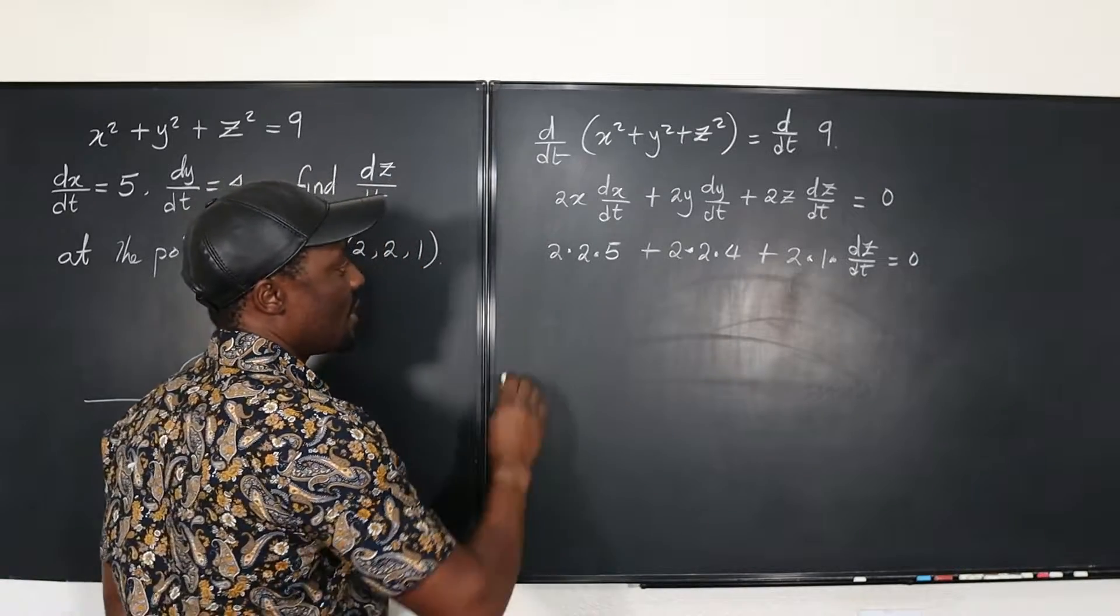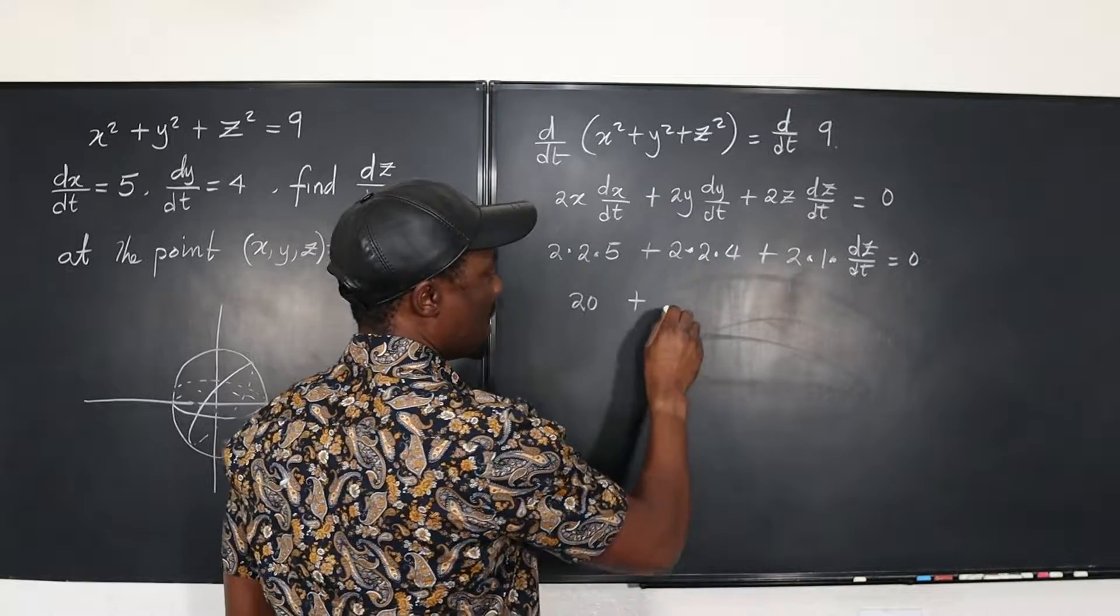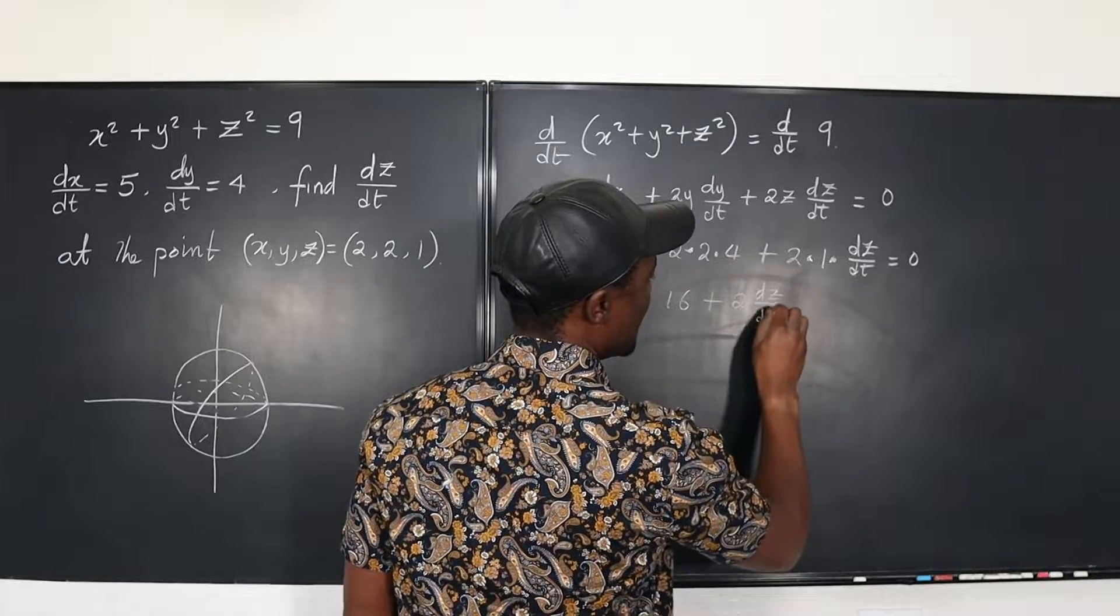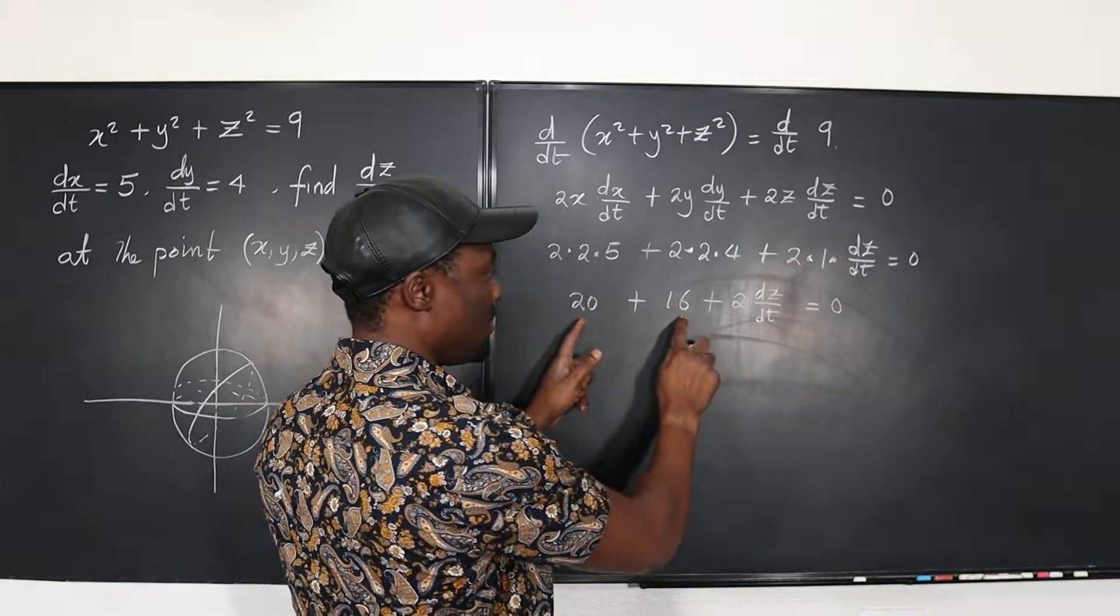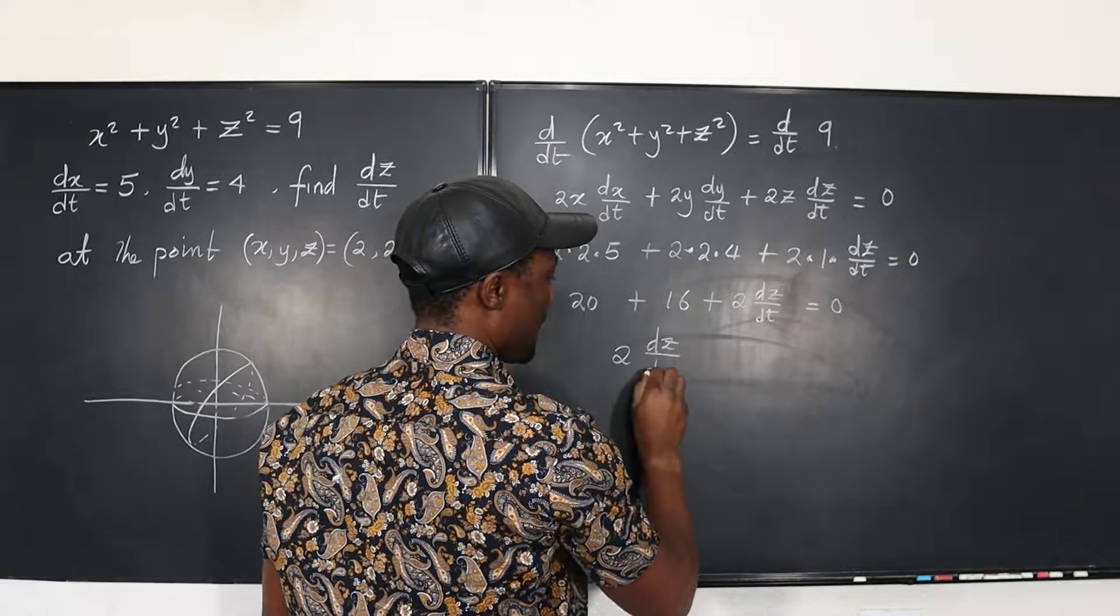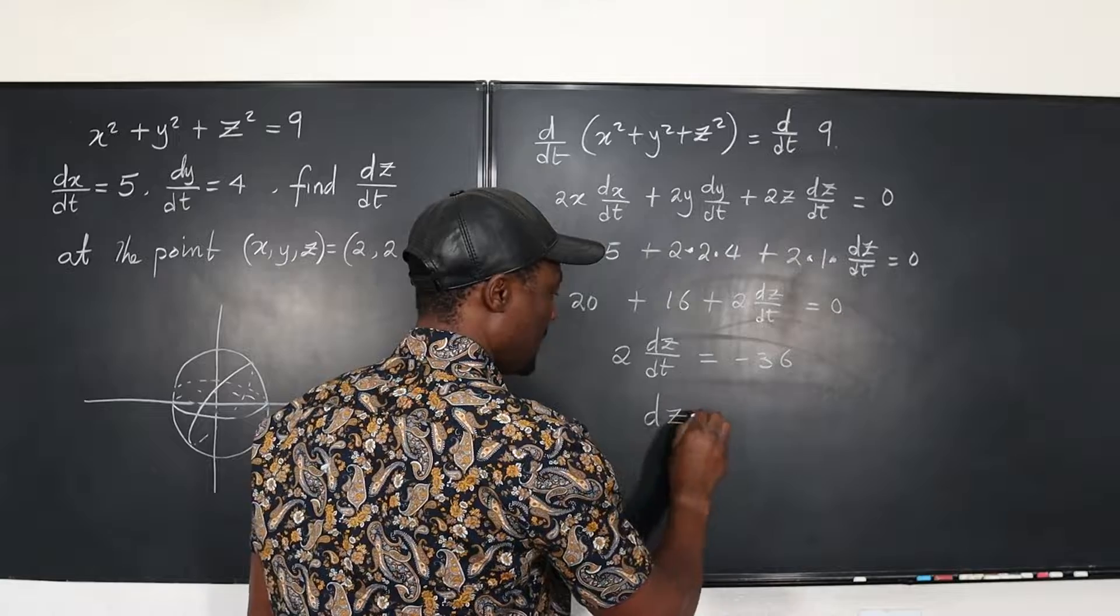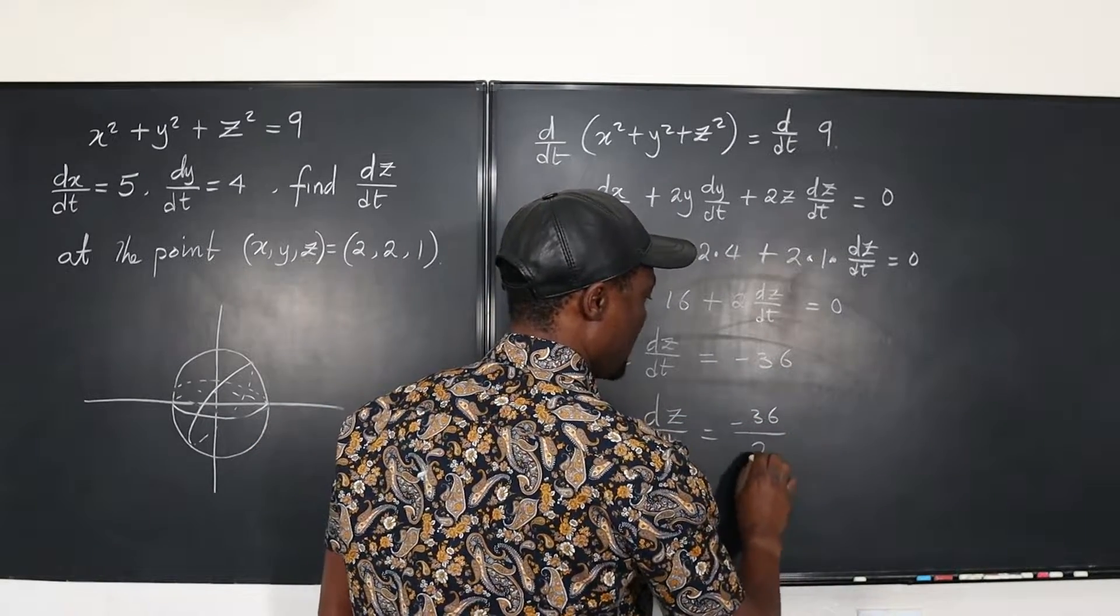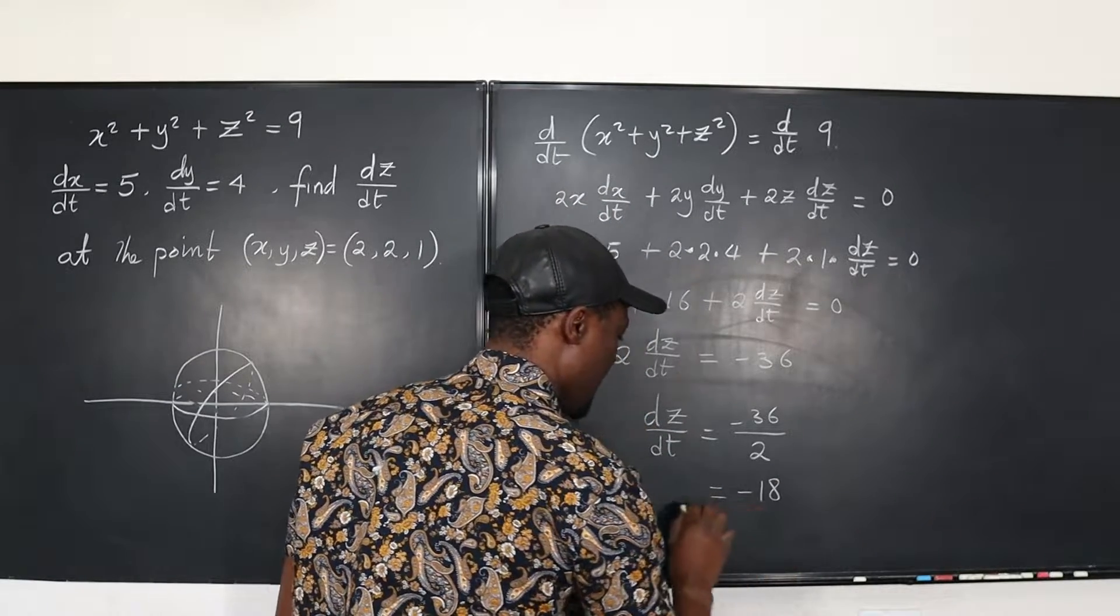So let's simplify. Here we've got 4 times 5, that's 20, plus 4 times 4, 16, plus 2 dz/dt is equal to zero. So if I add these together, I'm going to get 36. Move it over to that side. I have 2 dz/dt is equal to negative 36. So dz/dt is negative 36 divided by 2. And that gives me, let's write it here, negative 18. And that's dz/dt.